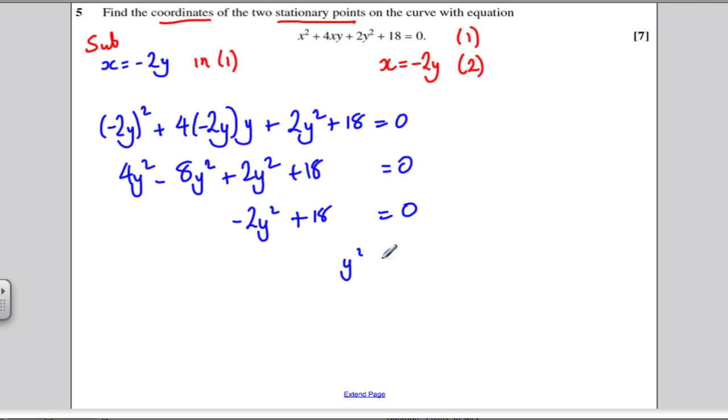So, rearranging, making y squared the subject. Subtract 18 from both sides. Divide by negative 2. Y squared must be 9. So, that tells us that y is 3 or y is negative 3.